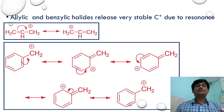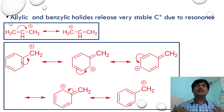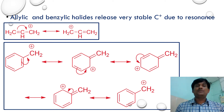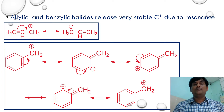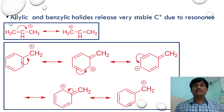Due to this greater stability, allylic and benzylic halides show higher rates of SN1 reactions and can readily exhibit SN1 type of reactions.